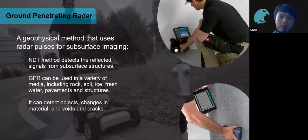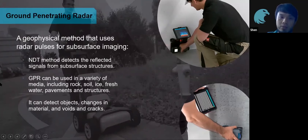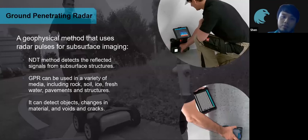So what is ground penetrating radar? It's a geophysical method that uses radar pulses for subsurface imaging. It uses radar to detect reflected signals from subsurface. GPR can be used across a variety of mediums — rock, civil engineering, soil, ice, pavement, and even structures.